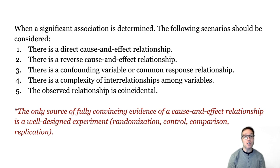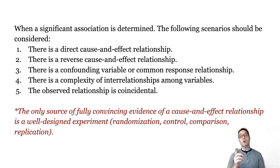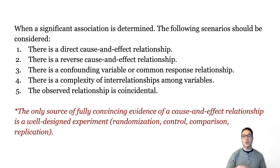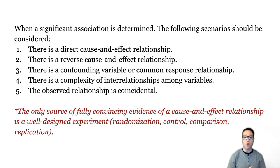So when a significant association is determined, here are the following scenarios that we should consider. One, there could be a direct cause and effect relationship. There could be a reverse cause and effect relationship. There could be a confounding variable or a common response relationship. There could be a complexity of interrelationships among the variables — that's what I think is most likely going on in the chocolate vs. Nobel Prize winners graph. Or the observed relationship is coincidental.